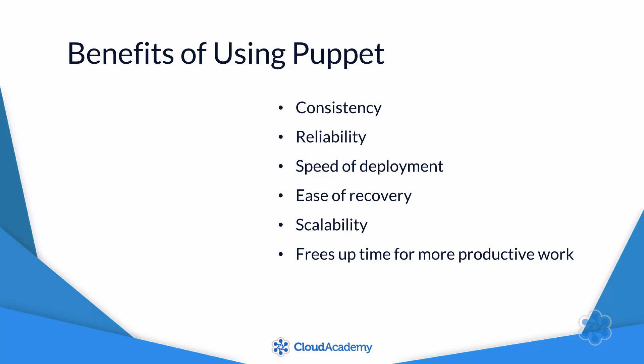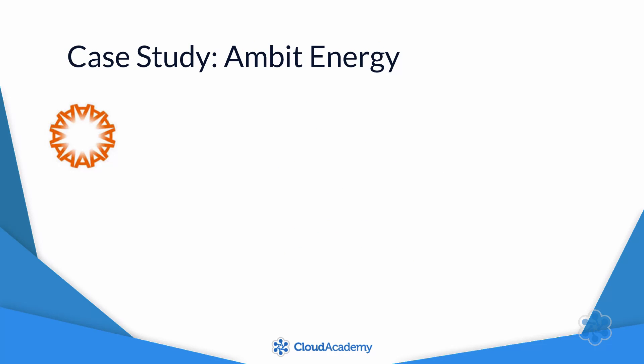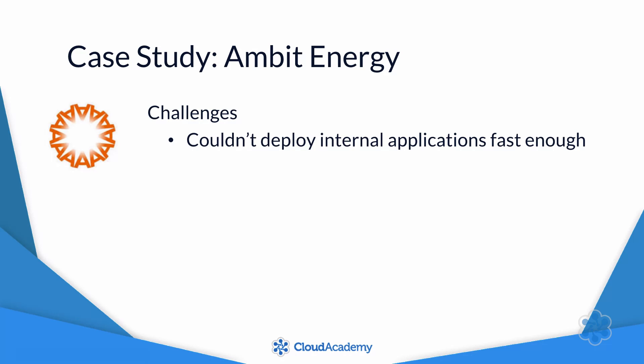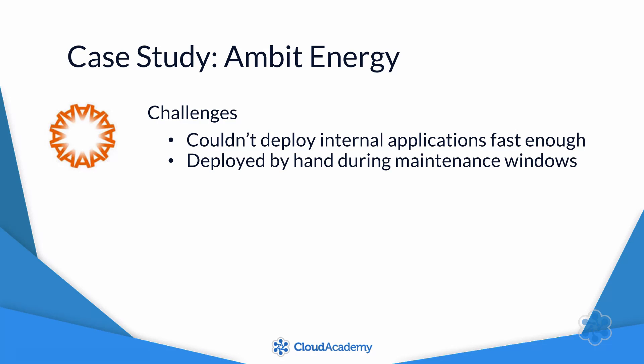You can find lots of examples of how companies are using Puppet on the Puppet website. One example is Ambit Energy, which is a $1 billion gas and electric service provider. Their biggest problem was that they couldn't deploy their internally developed applications fast enough. Before they automated their deployments using Puppet, the IT team performed all software deployments by hand during monthly or quarterly maintenance windows.